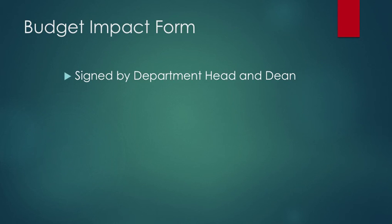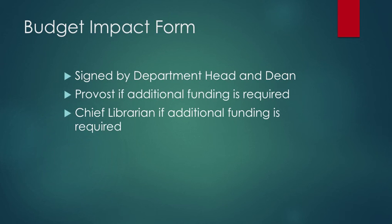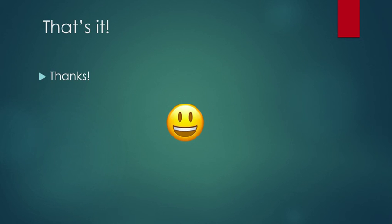The Budget Impact Form lets everyone know that the department, faculty, and the library have sufficient resources to support the course. Jen will fill it out and get the head's and dean's signatures. If additional resources are required, additional signatures are also required. The Curriculum Committee will not look at any proposals that are not complete, so if you need additional financial resources to support your course, you need to line that up before you submit your proposal. So that's the rundown on a Category 1 proposal. Thanks for taking the time to watch this tutorial, and I hope you found it helpful.